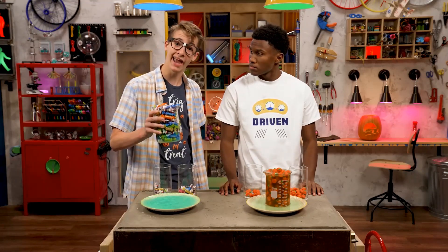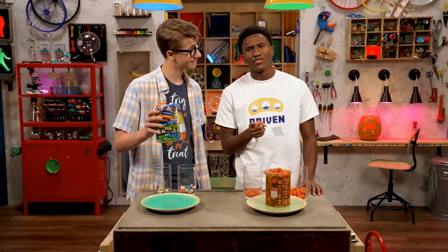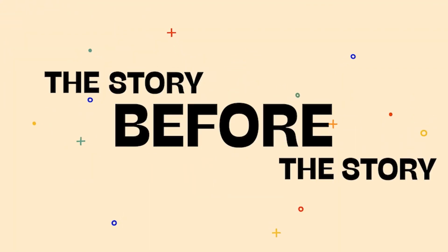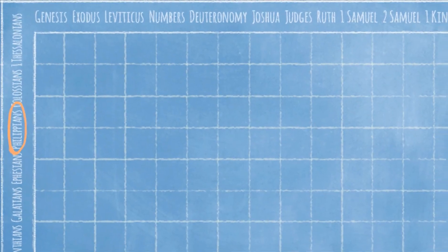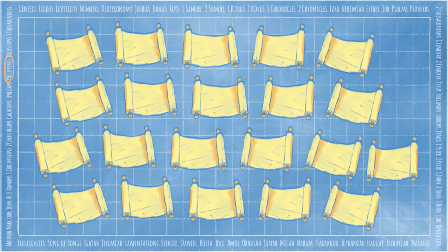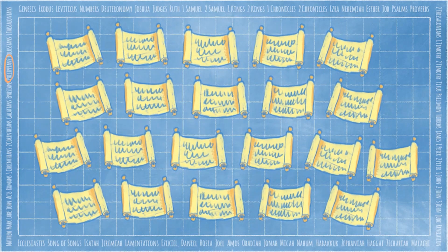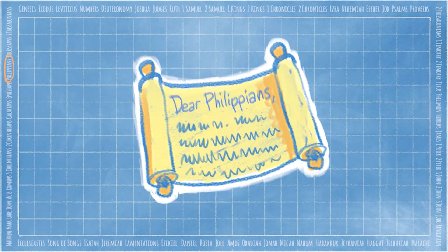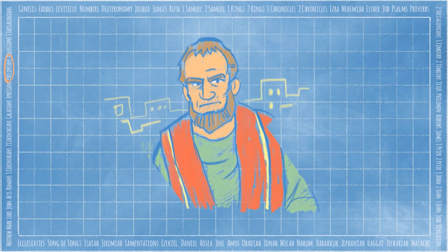Good in, good in. Bad out. Speaking of which, it's time for the story before the story. Today we're in the book of Philippians. Philippians is one of 21 letters in the New Testament. The leaders of the early church wanted to teach Jesus followers what was true, and they often wrote letters to do that. The apostle Paul sent one of these letters to the believers in the church at Philippi. Paul had spent several months in Philippi as the new church grew in the home of a woman named Lydia.